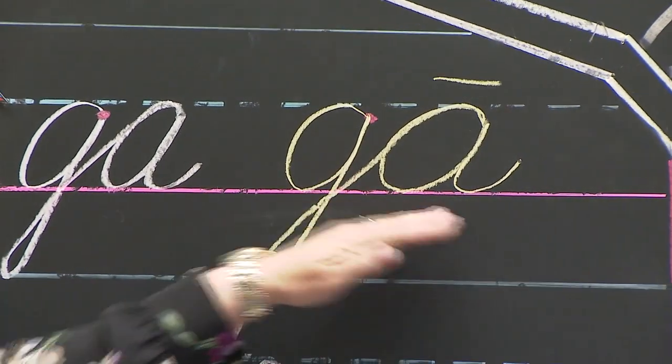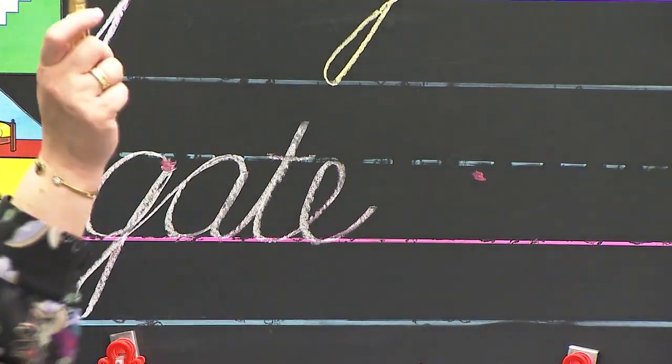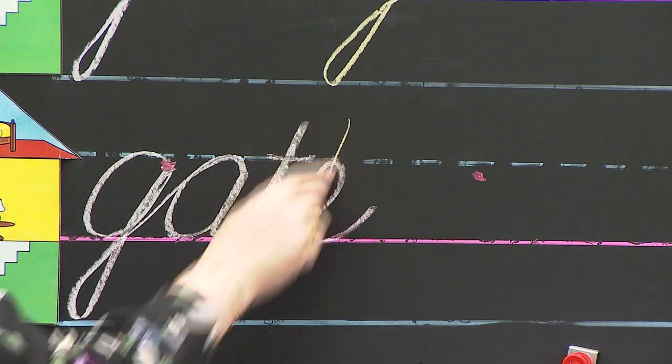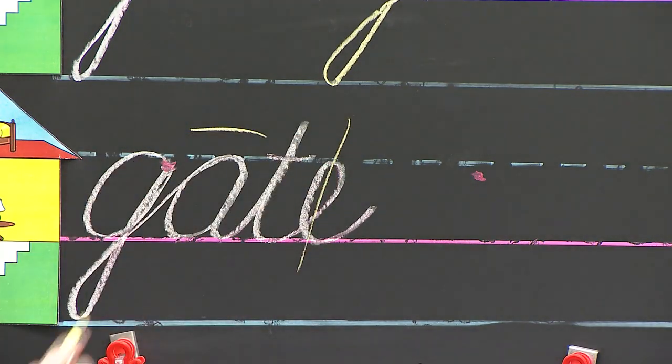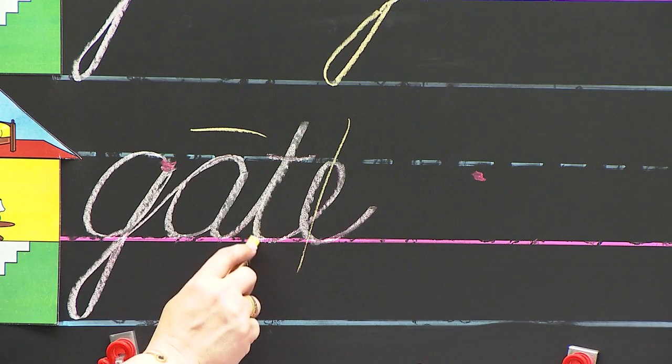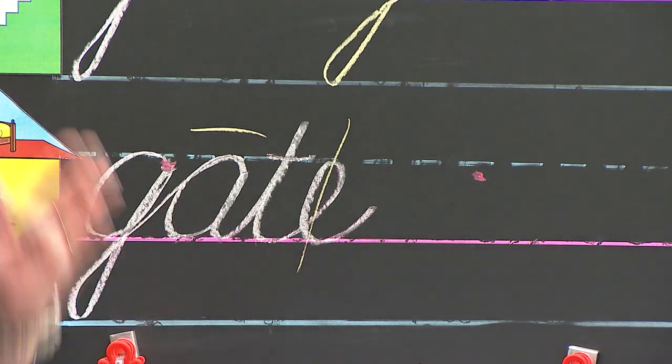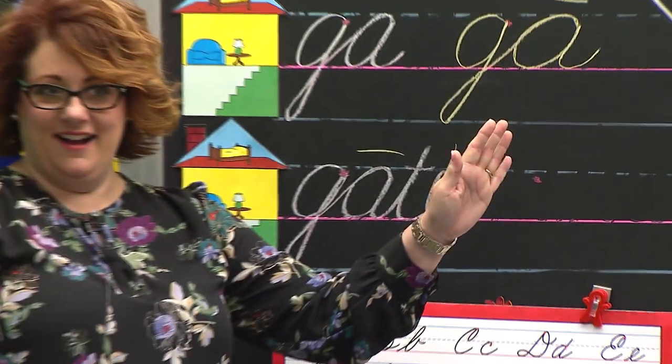Let's sound that out. G, A, GA. Because we're going to put the T and the E with it. Now the E we what? Cross. Cross it out. Look at that. So let's read this one. G, A, GA, gate. Gate. Open your gate. Oh, good job.